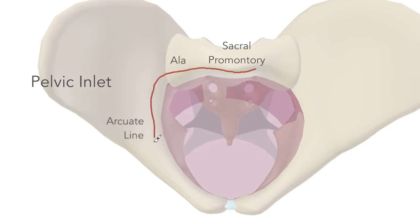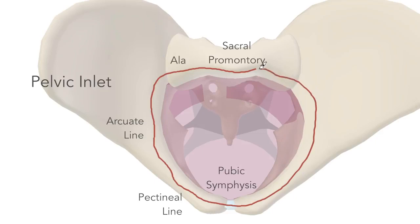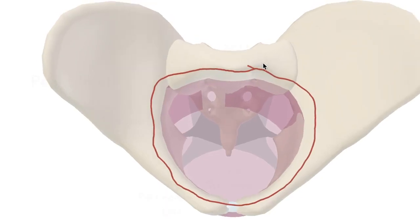The arcuate line, arcuate meaning curved, pectineal line, attachment for pectineus, the pubic symphysis, and the same on the other side: pectineal line, arcuate line, ala of sacrum, and promontory of sacrum. So this marks the superior border of the true pelvis.